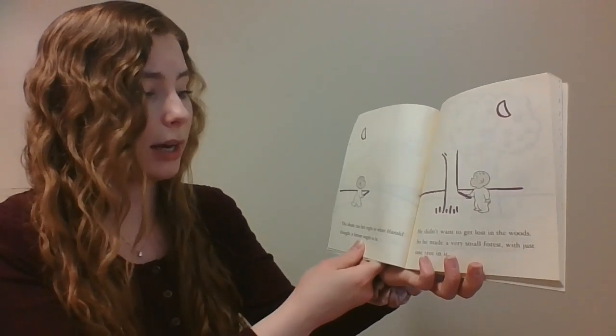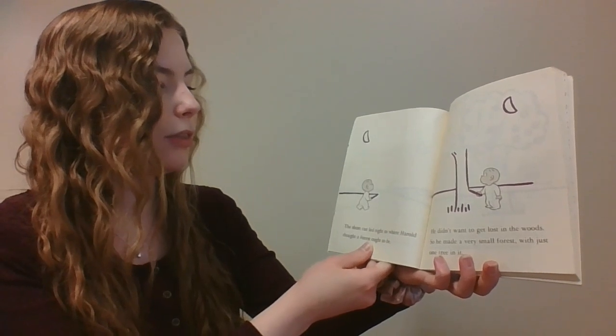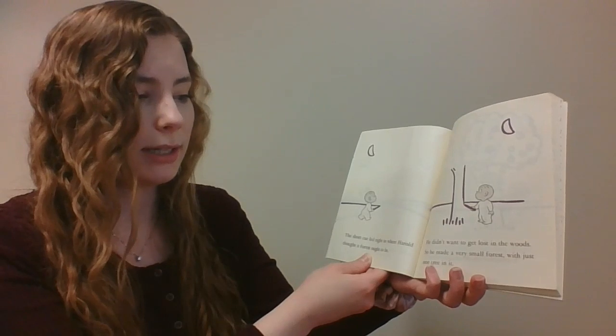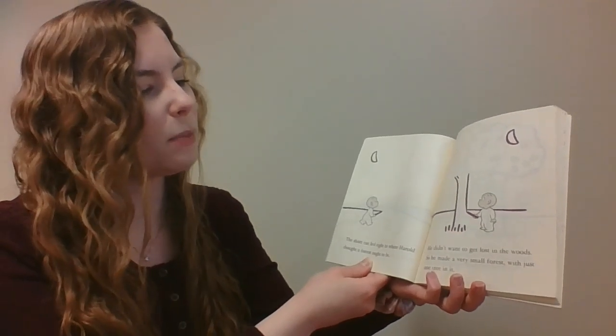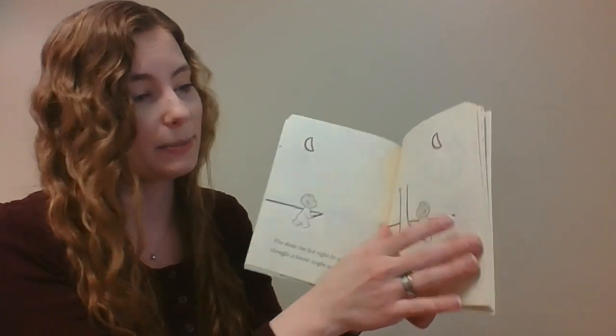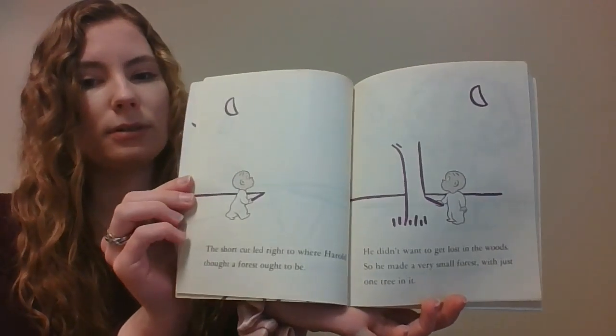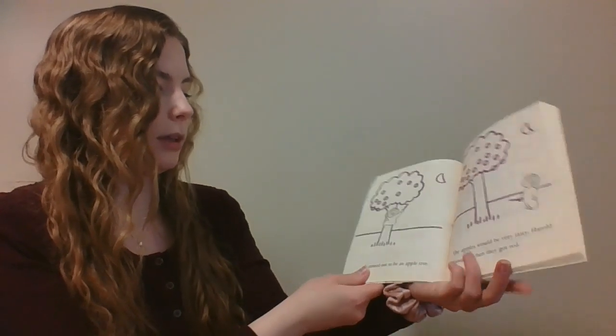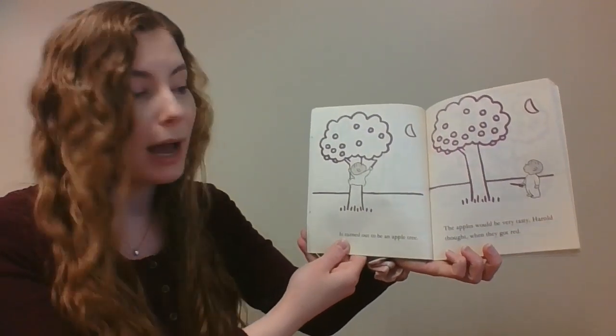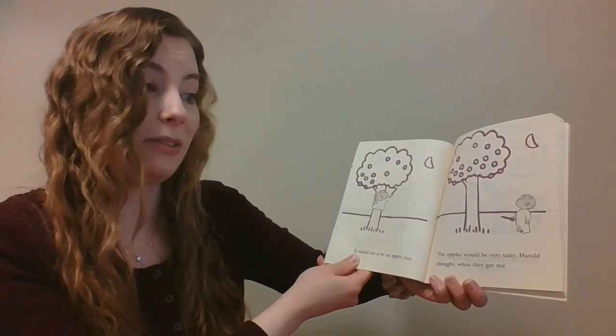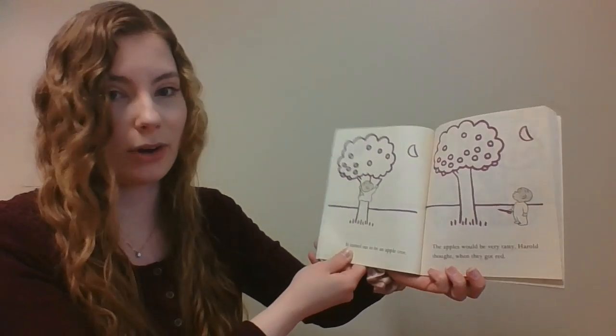The shortcut led right to where Harold thought a forest ought to be. He didn't want to get lost in the woods, so he made a very small forest with just one tree in it. It turned out to be an apple tree. The apples would be very tasty, Harold thought when they got red.